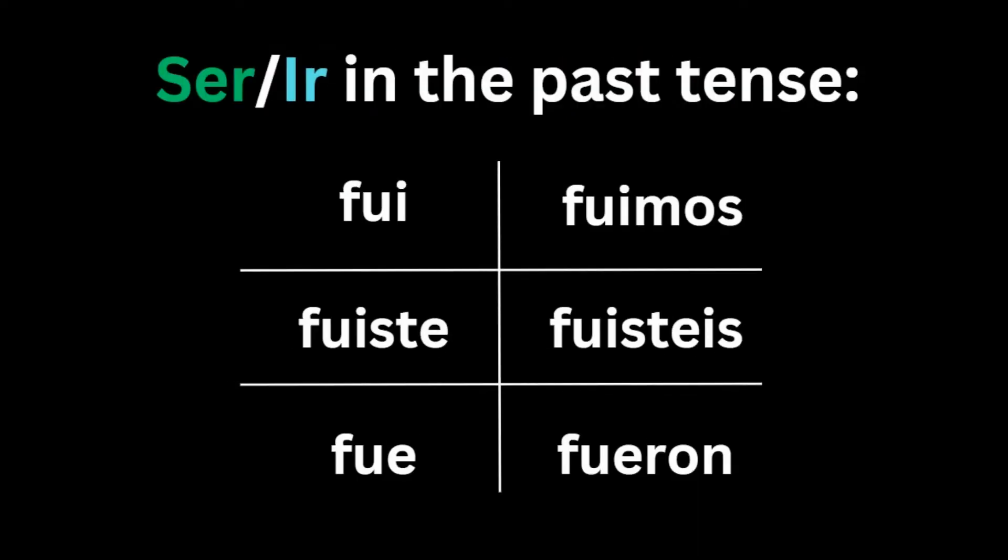The two verbs in the past simple tense share the same syntax, which makes Spanish more convenient, having an irregular conjugation pattern, so you can only tell the difference between them in context. Fui can simultaneously mean I went somewhere or to do something, or I was, as in actions that were completed in the past.